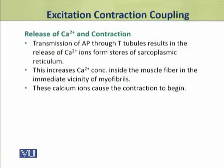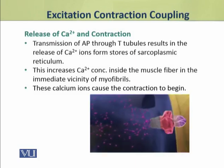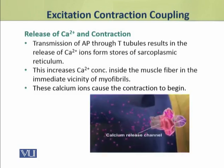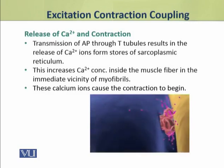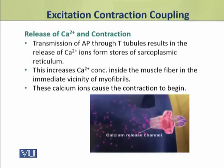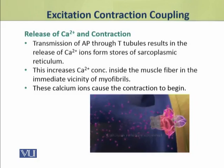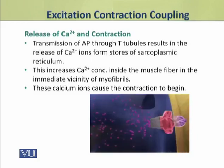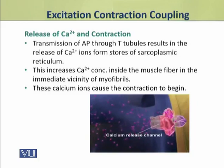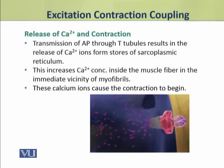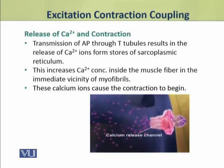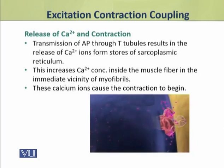The transmission of action potential through the T-tubules results in the release of calcium ions from the stores of the sarcoplasmic reticulum. The sarcoplasmic reticulum stores calcium ions, and when the action potential is transmitted through the T-tubules, it affects the sarcoplasmic reticulum, causing calcium ions to be released from it.